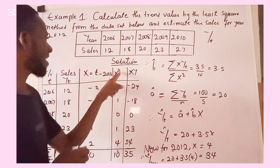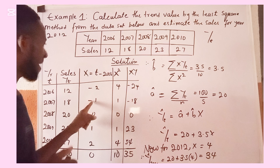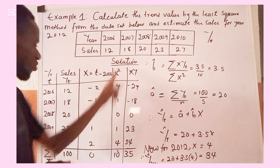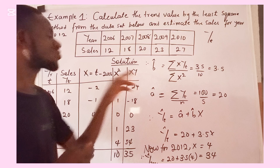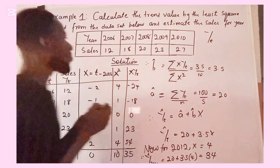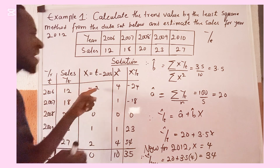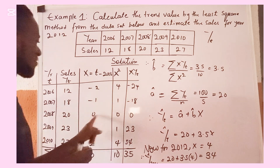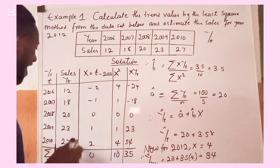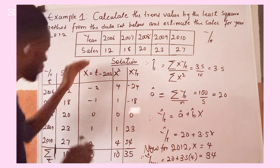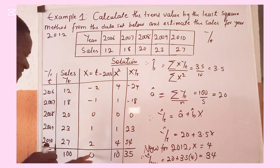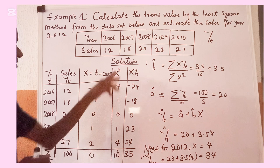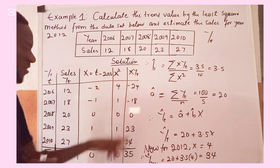Next we compute x squared: minus 2 squared is 4, minus 1 squared is 1, 0 squared is 0, 1 squared is 1, and 2 squared is 4. For the x·y column, we multiply each sales value by its time: 12 times minus 2 is minus 24, 18 times minus 1 is minus 18, 20 times 0 is 0, 23 times 1 is 23, and 27 times 2 is 54. Summing the columns: the sum of y is 100, the sum of x is 0, the sum of x squared is 10, and the sum of x·y is 35.